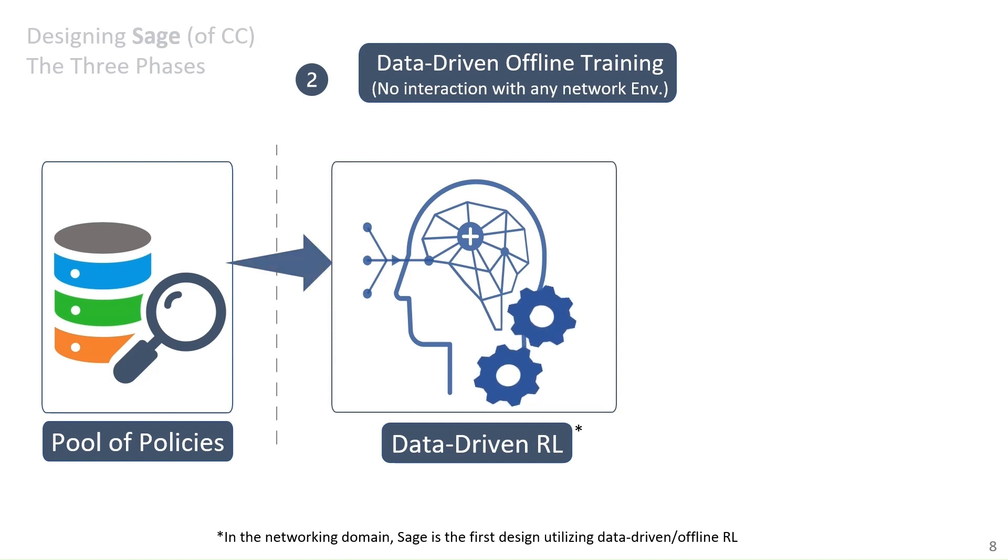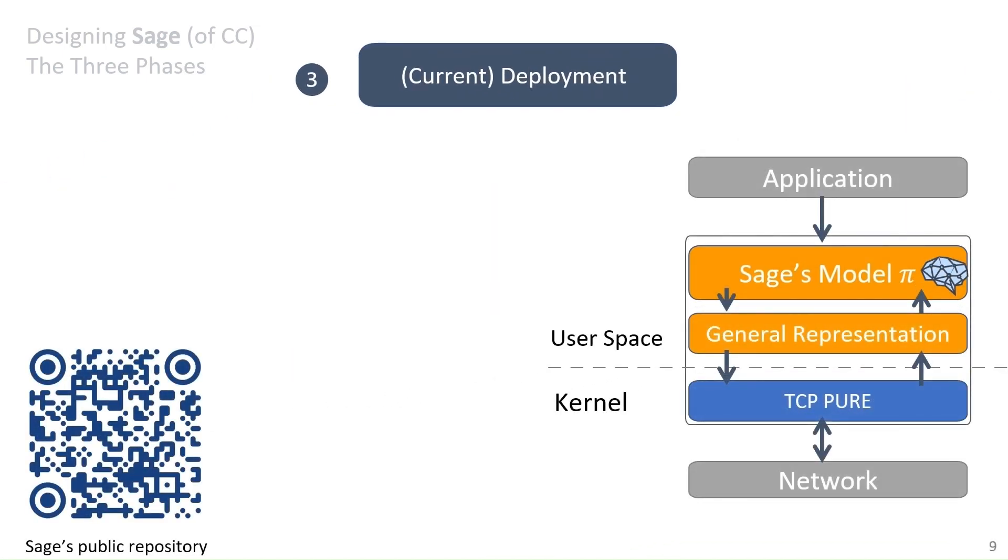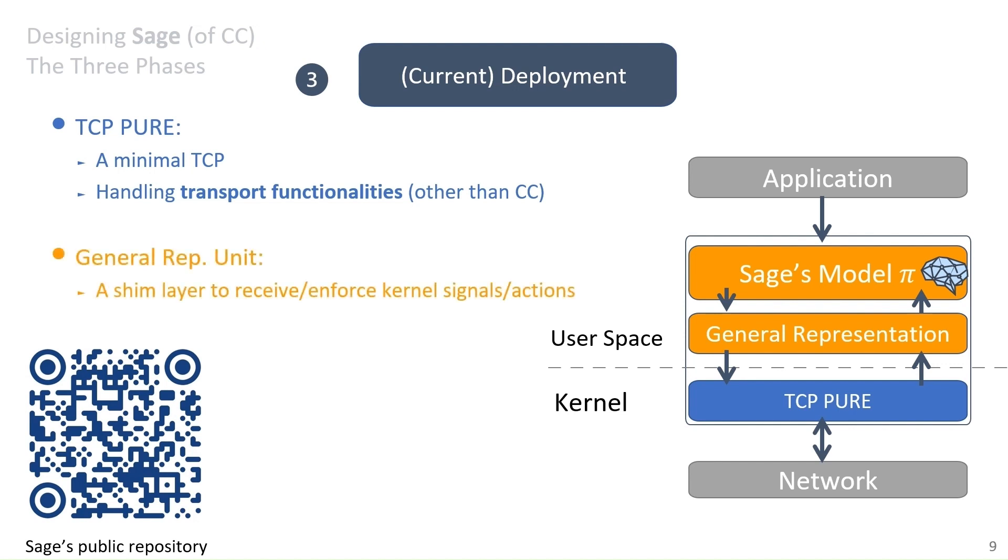So after the training, which is fully offline, is done, we get SAGE's model, which is basically based on a deep neural network. Then we put SAGE in this new architecture. There are two extra components here. One is TCP-Pure. This is a minimal TCP that we have implemented at the kernel side and it tries to handle general transport functionalities other than congestion control. When it comes to congestion control, TCP-Pure is a dummy one. It just executes the instructions given. The other component is general representation unit. Think about it as a shim layer to receive and enforce current signals and actions. Feel free to check out the public repository of the project for the details of the deployment.